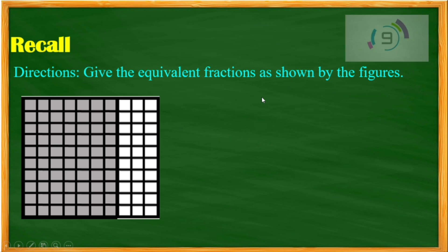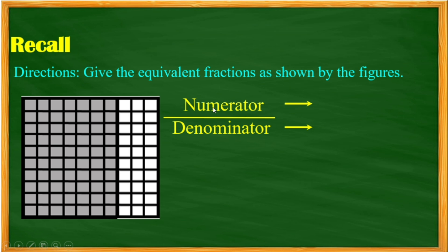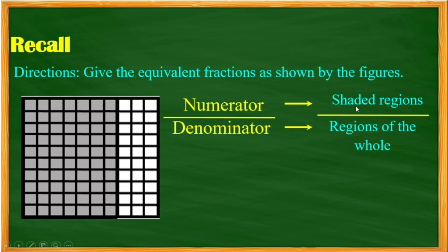Okay, time is up. Now, the numerator is the shaded region and the denominator is the region of the whole. The numerator is 70 — this would be the shaded region — and the whole region is 100. So, 70 hundredths.